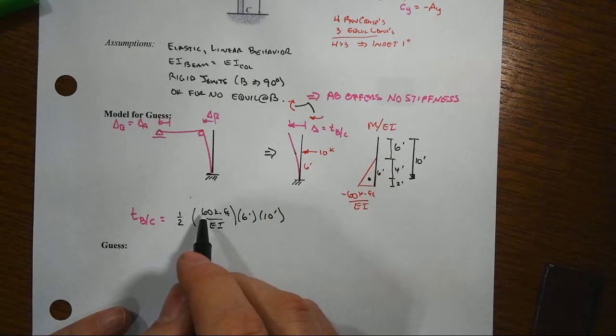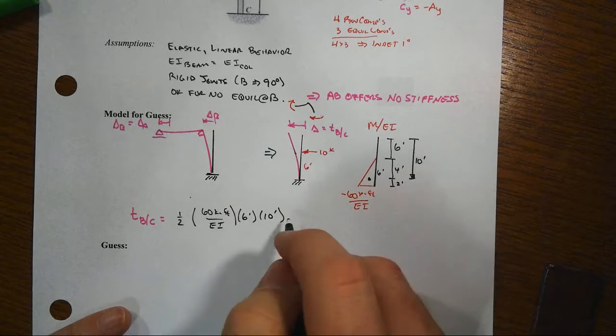And let's see if I can do this one in my head. That would be six times, well that would be 60 times 60 squared. So that's 3600 over two. So that would be 1800.